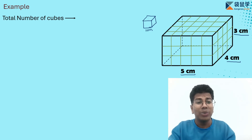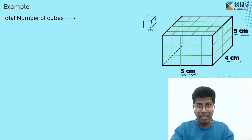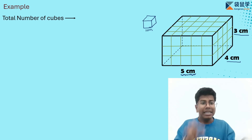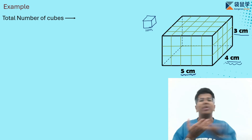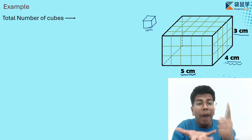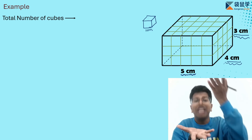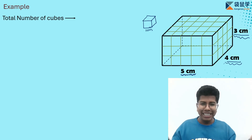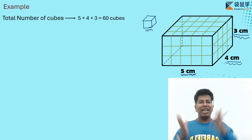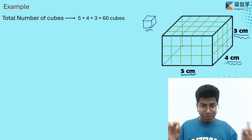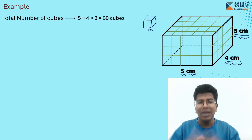To calculate the total number of cubes, let's see how many cubes are at the base. On one length there are 5 cubes, so on the total base it's 5 times 4. On the base it's 5 times 4 for one layer, but there are 3 such layers in total. So 20 cubes per layer times 3 layers equals 60. To calculate total cubes, we simply multiply length times width times height.